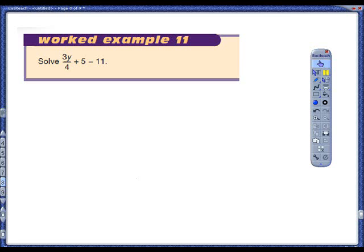With this question we've been given 3y over 4 plus 5 is equal to 11. So I'm going to firstly rewrite it just like this to give myself a little bit more room.